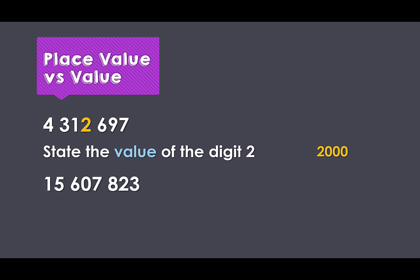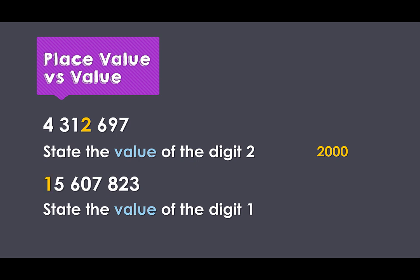In our second example, state the value of the one. Here we've located the number one, and we can see — again using the spacing in our numbers and our groupings of three — that the one is sitting in the tens of millions column. This means the one is worth ten million.